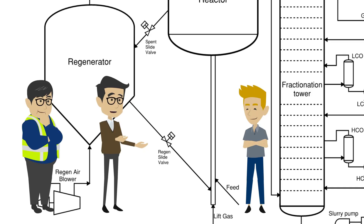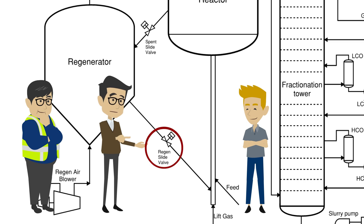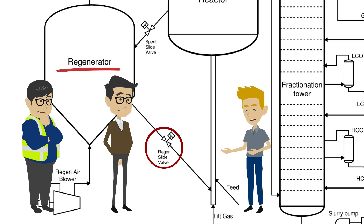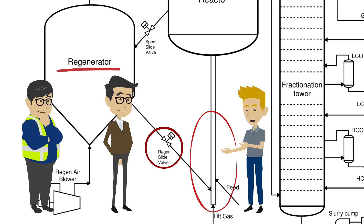Leaving the regenerator, the catalyst flows through the regen slide valve. The regen slide valve maintains the catalyst level above the valve to maintain a barrier between the regenerator and the reactor standpipe. The valve controls the reactor vapor temperature.